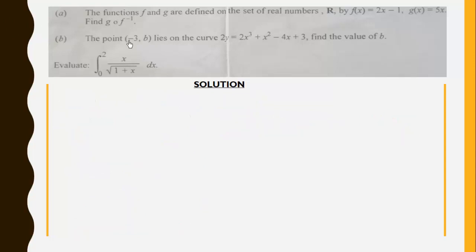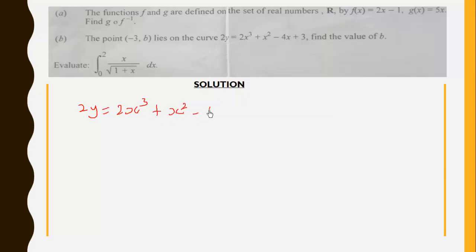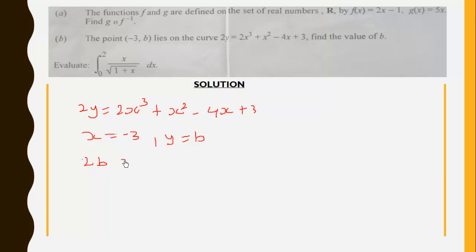Now for part b: the point (-3, b) lies on the curve, so we need to find the value of b. Since this point lies on the curve, it must satisfy the equation 2y = 2x³ + x² - 4x + 3. We substitute x = -3 into the equation, giving 2b = 2(-3)³ + (-3)² - 4(-3) + 3.